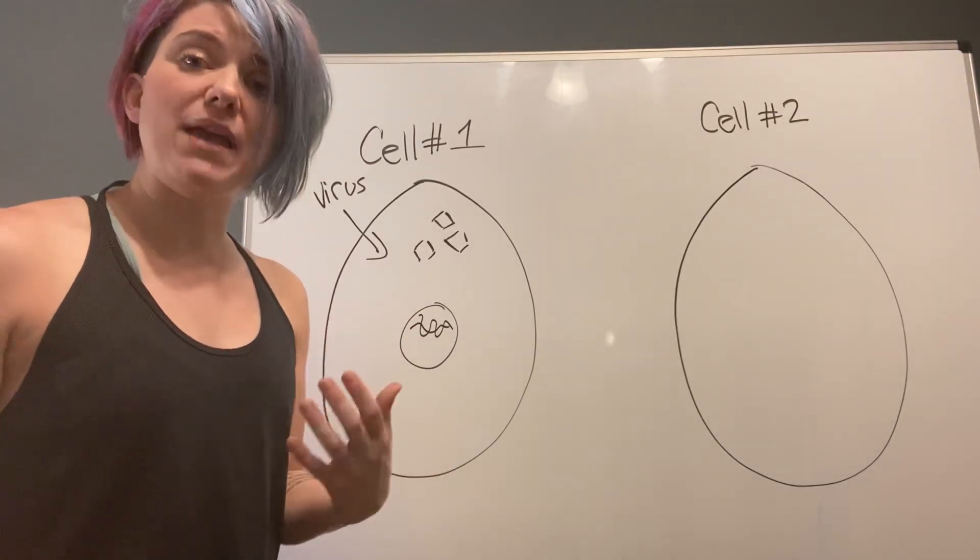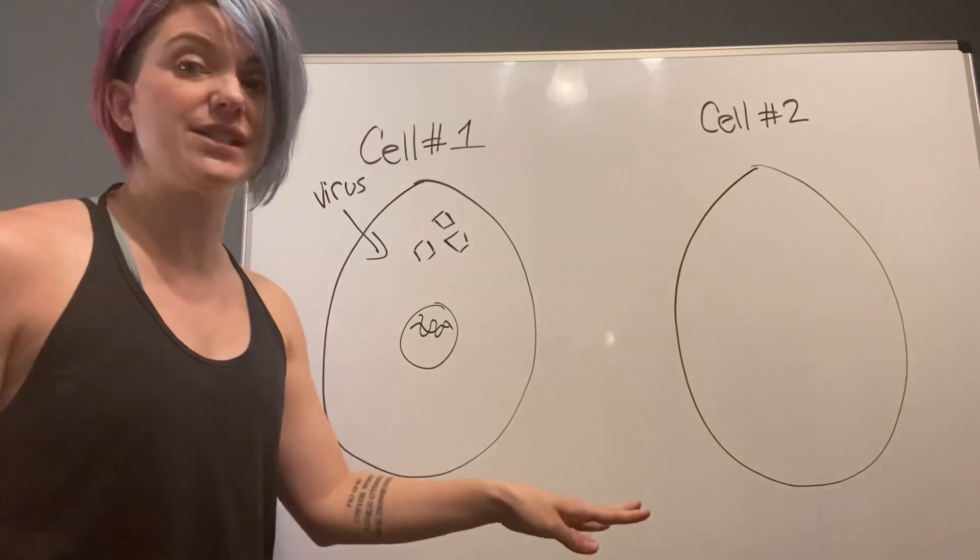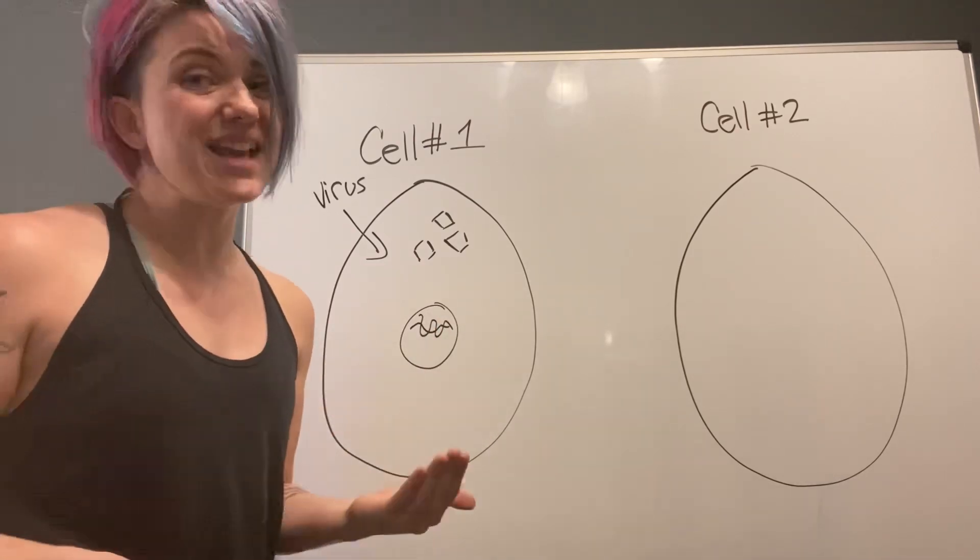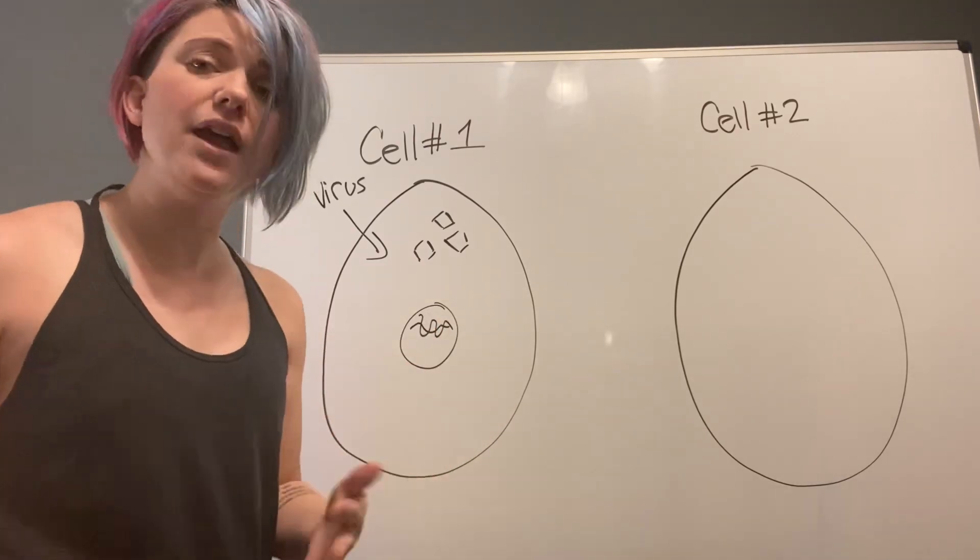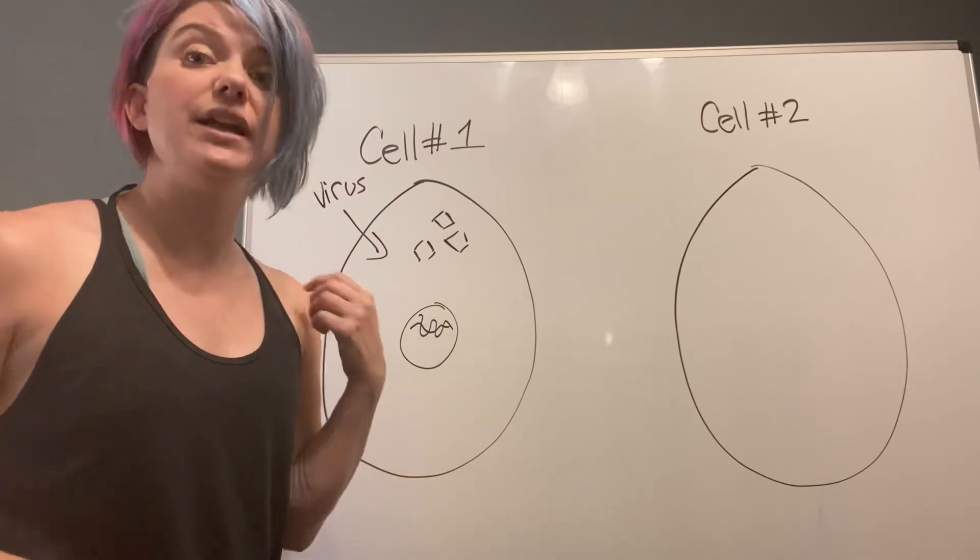Interferon alpha and beta are signaling molecules that allow one cell to talk to another cell. Because remember, our cells don't have mouths, our cells don't have ears, so they can't say anything and they can't hear anything. How they talk to each other is actually through molecular interactions.